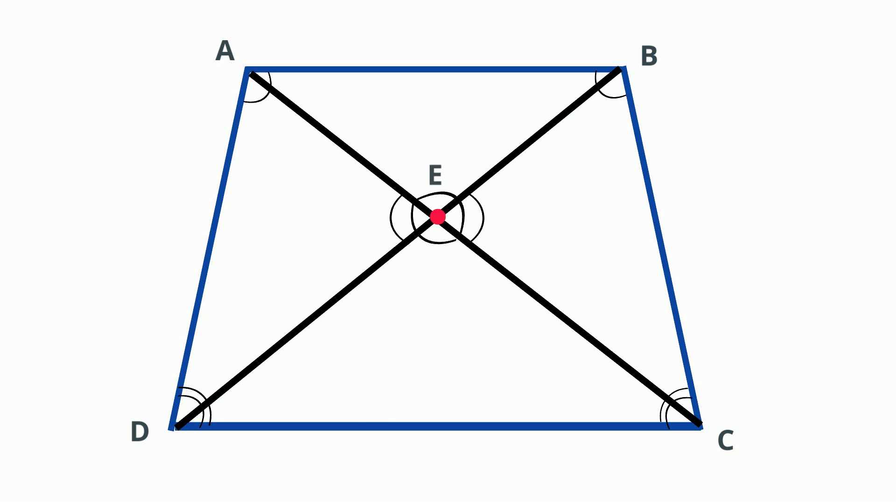Now A, E, B is adjacent to B, E, C. Notice that they share a common line and a common vertex.